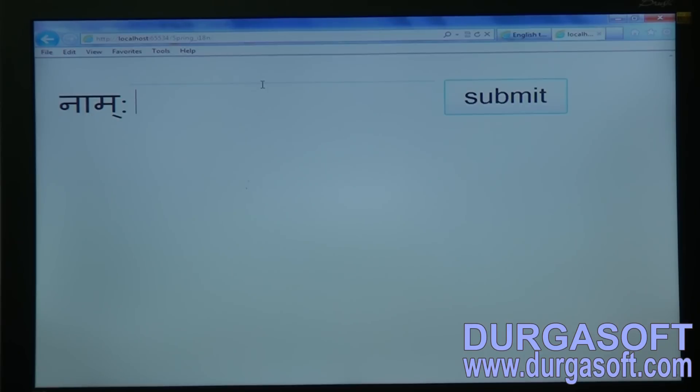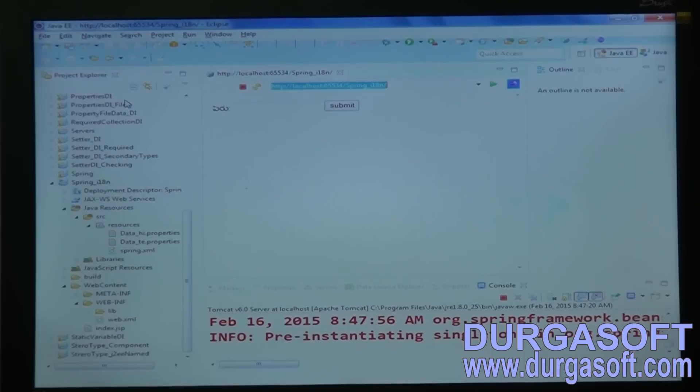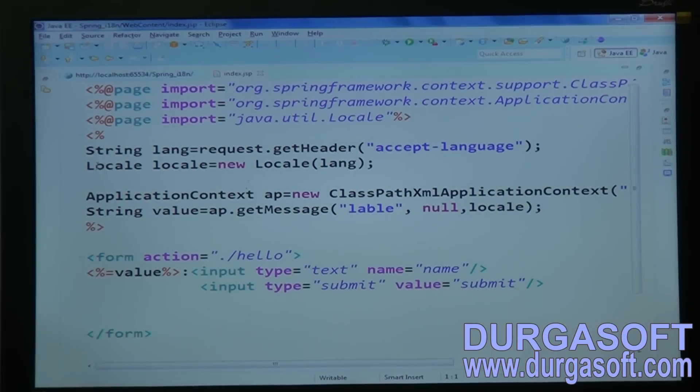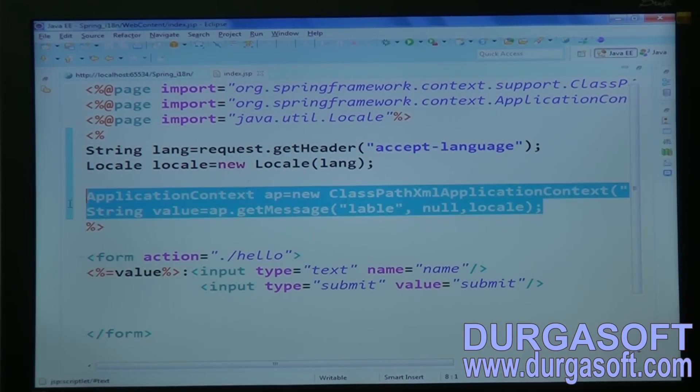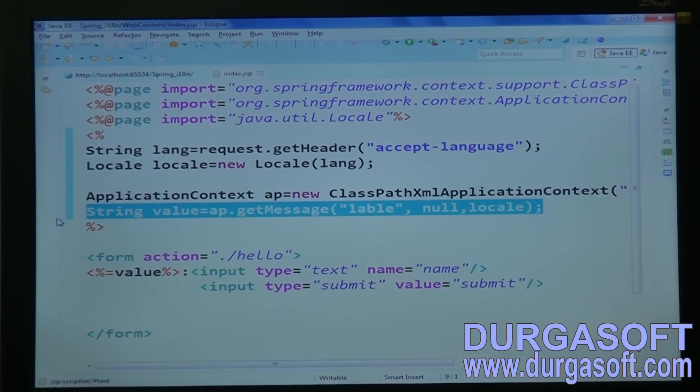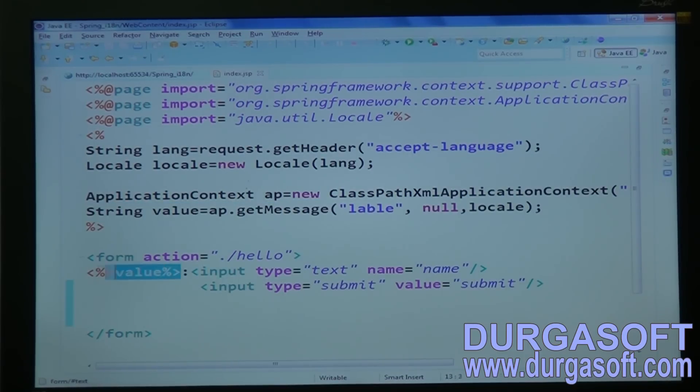So if you required, anywhere if you required particular language properties data, you require to know that language, which language browser is using, that language you have to find first. And then, by passing that language value into this get message method, you can get your required values. Okay. Then by using that values, you can apply I18N. That's it. Simple, right?